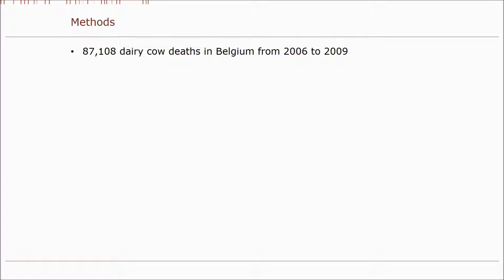We used data on all natural dairy cow deaths in Belgium from 2006 to 2009, and we looked at three different pollutants: ozone, particulate matter with diameter less than 10 micrometers, and nitrogen dioxide. We used air pollution estimates at the level of the municipality because farm addresses were not available.